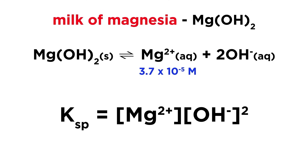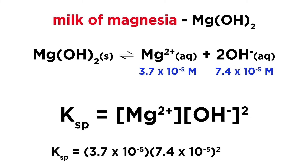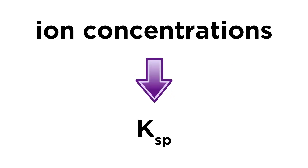If this is the concentration of the magnesium ion, then the hydroxide ion concentration must be precisely double, since there are two hydroxide ions for every magnesium ion in this substance. So all we need to do is plug these two concentrations into the expression, evaluate, and we will get 2 times 10 to the negative 13 for Ksp, which will be a unitless constant just like other equilibrium constants.